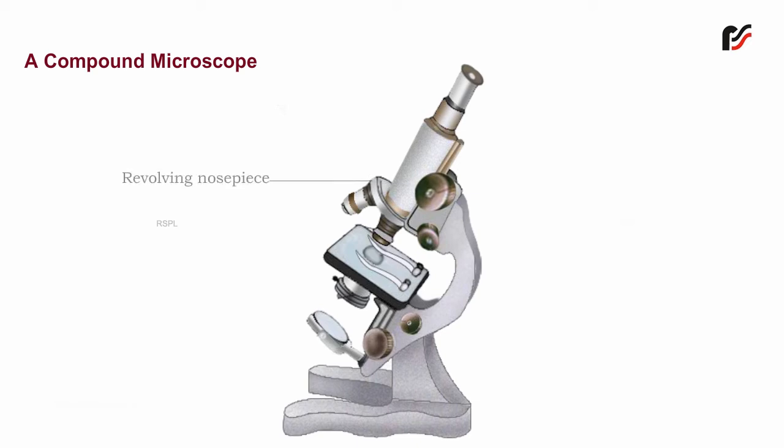Revolving Nose Piece: It is the circular metallic piece attached to the lower end of the body tube. It is fitted with three objective lenses having different magnifications.